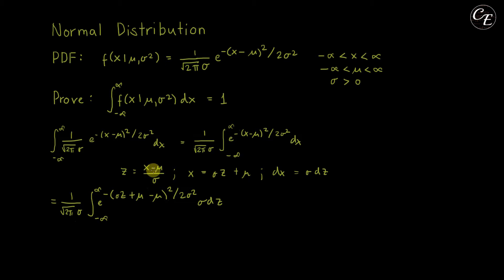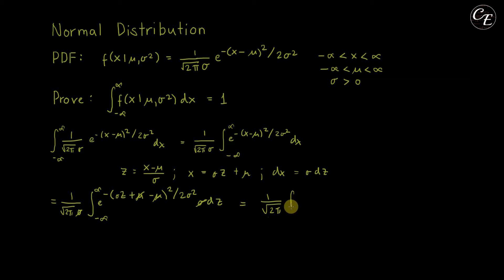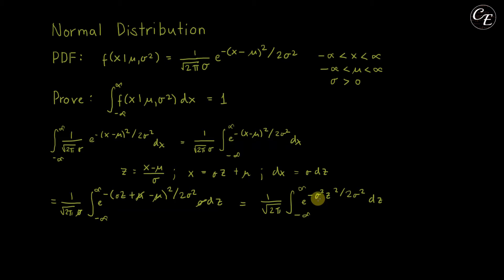Observe that our transformation function is monotonically increasing, so we should have no problem with the transformation. Now we can cancel out sigma and sigma, and plus mu minus mu. So we are left with 1 over square root of 2 pi, times the integral of e raised to negative sigma squared z squared over 2 sigma squared, dz, from negative infinity to positive infinity. We can cancel out sigma squared and sigma squared.